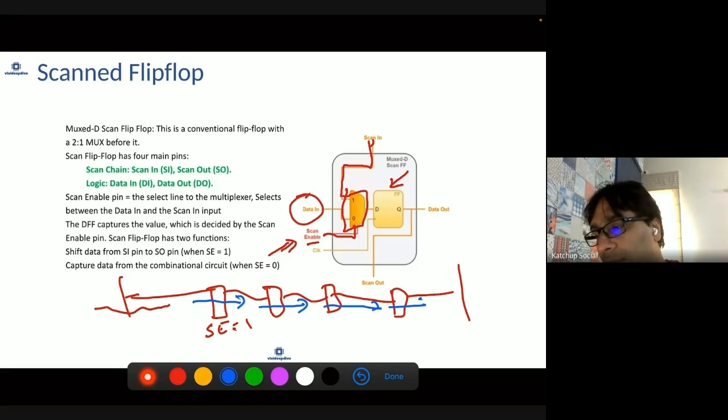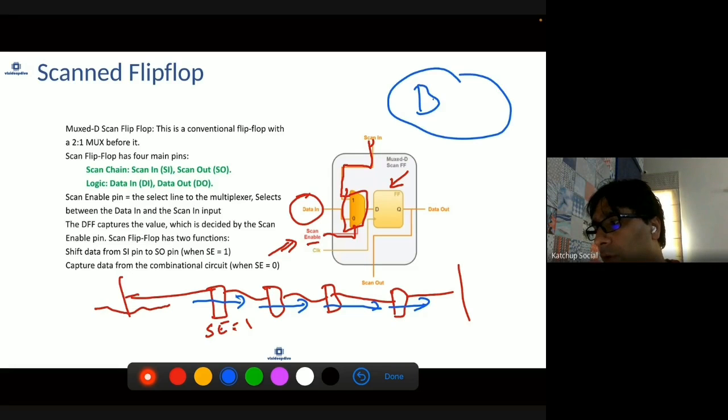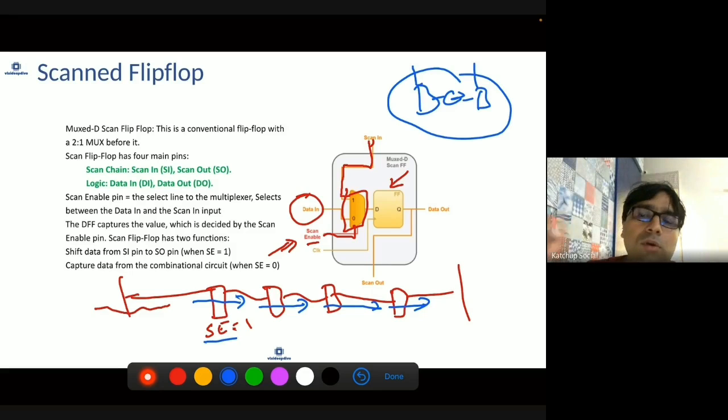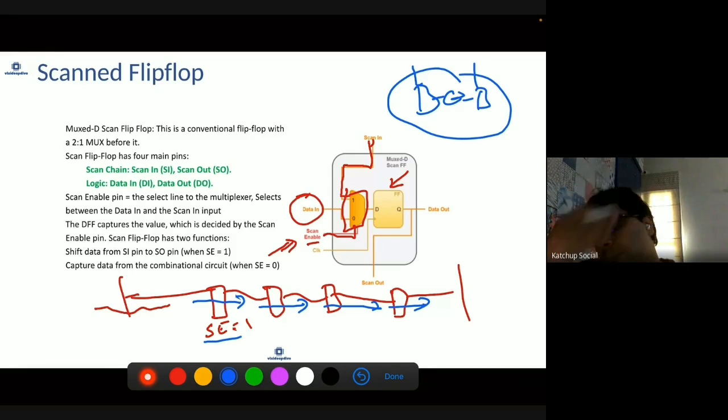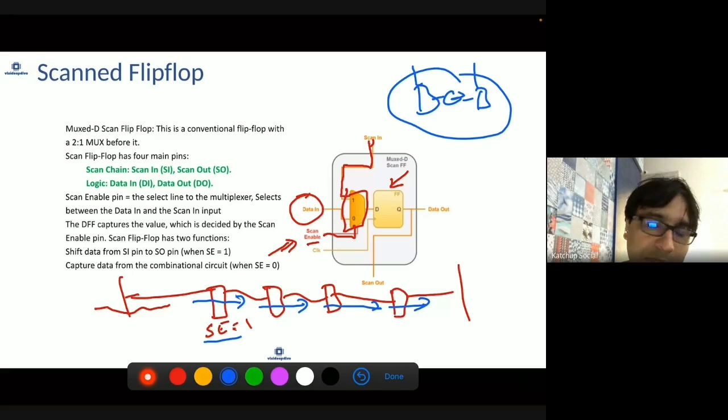When scan enable is 0, the logic will behave normally. Basically, whatever flops were connected to whatever flops, scan chain is just separate logic which is additionally done. But when scan enable is 0, your logic will behave normally, as it was behaving before the introduction of this flop. But when scan enable is 1, they will become part of one big chain, and basically, you can control or observe. You can have more than one scan chain in the design, depending upon how fast you want to do testability.